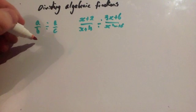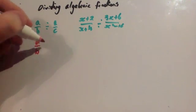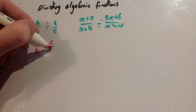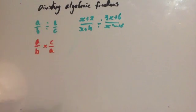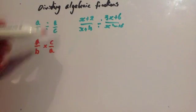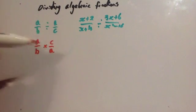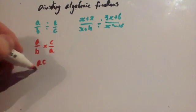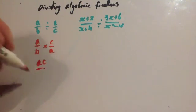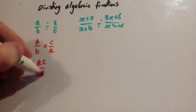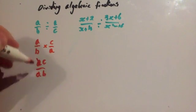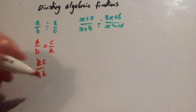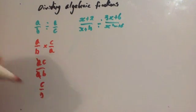So you're going to get A over B times C over A. We've changed it and flipped it over. A times C is AC, B times A is AB, and the A cancels with the A, so we've got C over B. The answer is C over B.